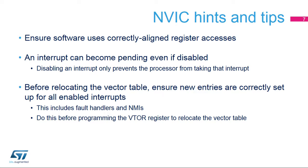An interrupt becomes pending when the source asks for service. Disabling the interrupt only prevents the processor from taking that interrupt. Make sure the related interrupt flag is cleared before enabling the interrupt vector. Before relocating the vector table using the VTOR register, ensure that fault handlers, NMI, and all enabled interrupts are correctly set up at the new location.